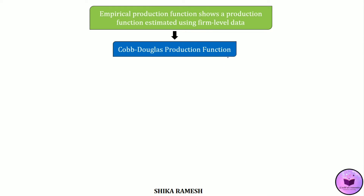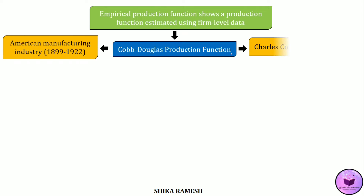The Cobb-Douglas production function was put forward by mathematician Charles Cobb and economist Paul Douglas, based on an empirical study of the American manufacturing industry.